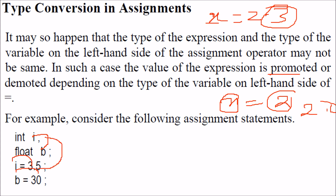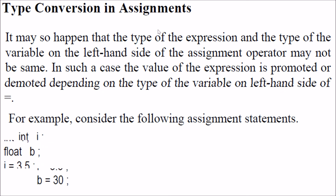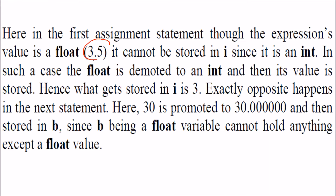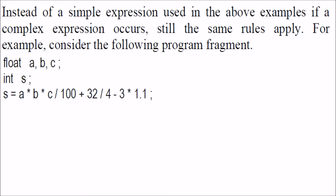Example: integer i and b. If i is assigned 3.5, since i is an integer, 3.5 will be truncated to 3. If b is 30 but b is declared as float, then 30 will become 30.000. So for i you get 3, and for b you get 30.000 because it has been assigned to a float variable.